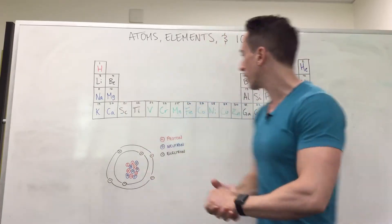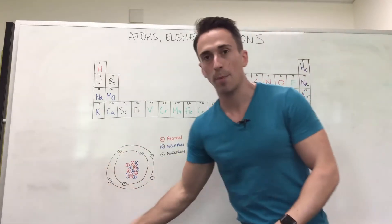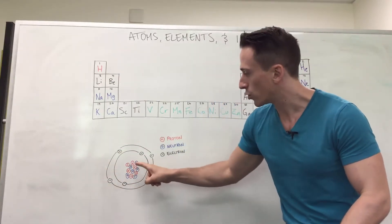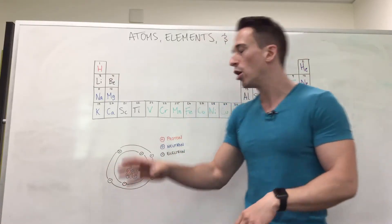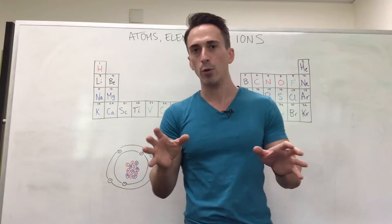You can do this for any other one. For example, carbon, which I've drawn up here, has six protons, six neutrons, six electrons, cancels each other out. There's no charge for carbon when we look at it on the periodic table. So these are atoms.